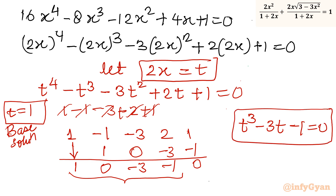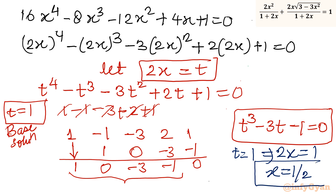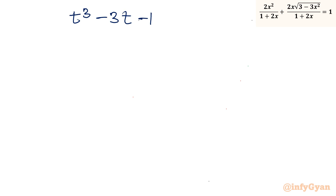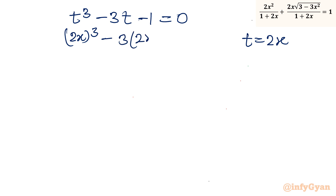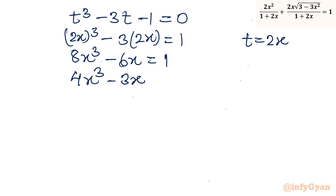Now we must solve t³ − 3t − 1 = 0. Substituting back t = 2x gives (2x)³ − 3(2x) − 1 = 0, i.e., 8x³ − 6x = 1. Dividing by 2: 4x³ − 3x = 1/2.